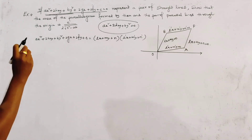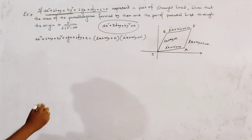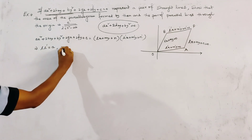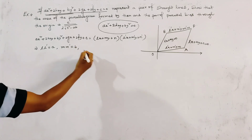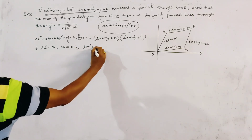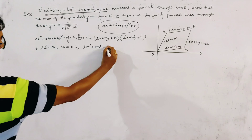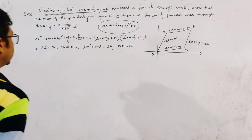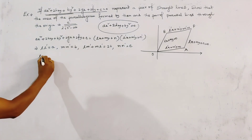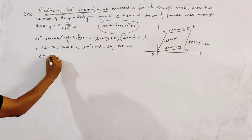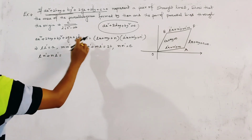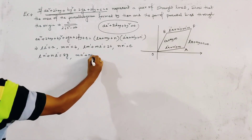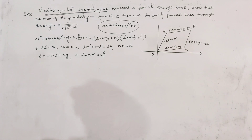Comparing equal powers from the product expansion, we get: ll' = a, mm' = b, lm' + ml' = 2h, nn' = c, nl' + n'l = 2g, and nm' + n'm = 2f. We obtain all the relations by equating the coefficients of equal powers.